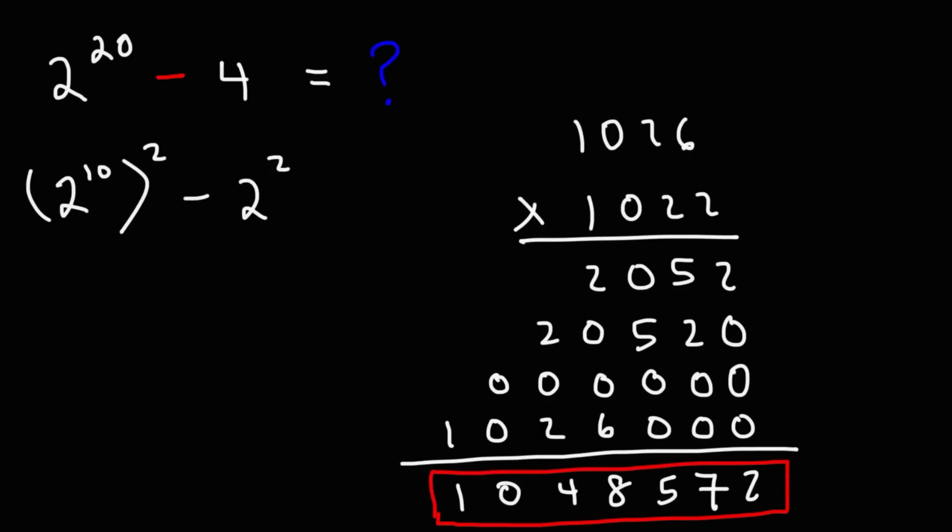So that is the final answer. That's how we can evaluate this expression without the use of a calculator. So it's 1,048,572. That's the value of 2 to the 20th power minus 4.